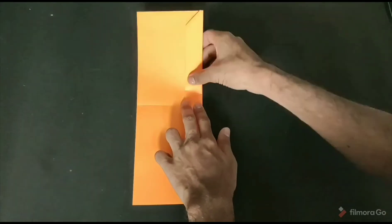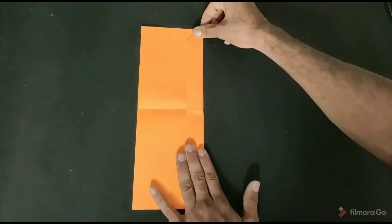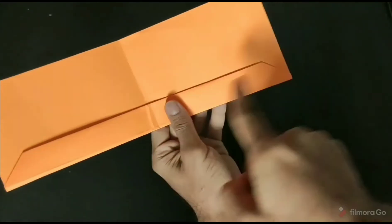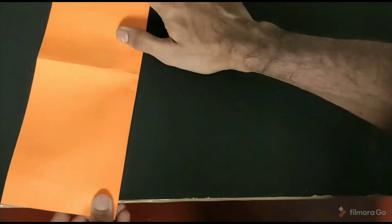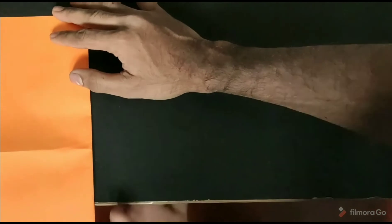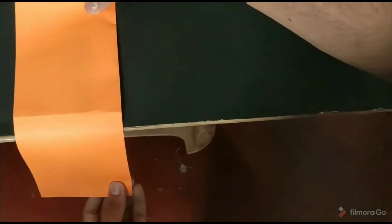Unfold it. Now what you are going to do is just smooth this part, this hardened part, by rubbing it on the edge of the table, just like this as shown.